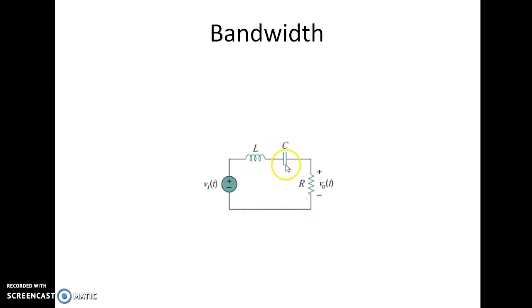Hello friends, we were discussing series RLC resonance and you know that if we take the output across the resistor, this circuit is a band pass filter and if we take the output across the inductor and capacitor combination, then it becomes a band stop filter.